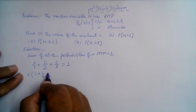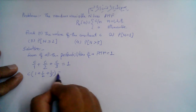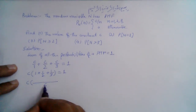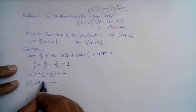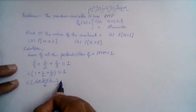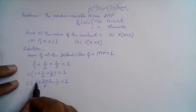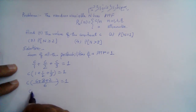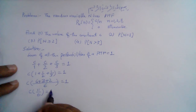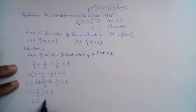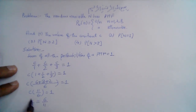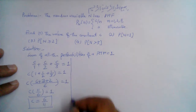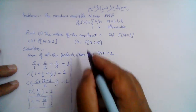Taking c as common, we get c times (1 + 1/2 + 1/3) = 1. The LCM is 6, so this becomes c times (6 + 3 + 2)/6 = 1, which is c times 11/6 = 1. Therefore, the value of the constant c is 6/11.